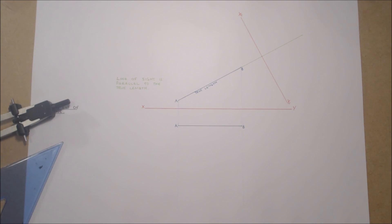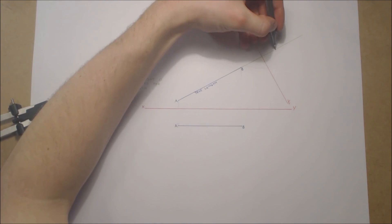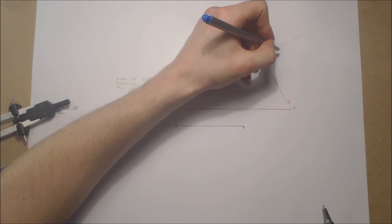Once these distances are transferred, we have found our point view of our line AB.